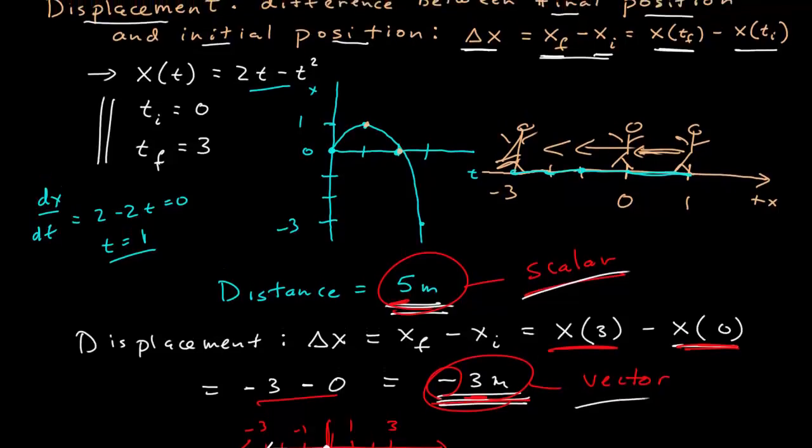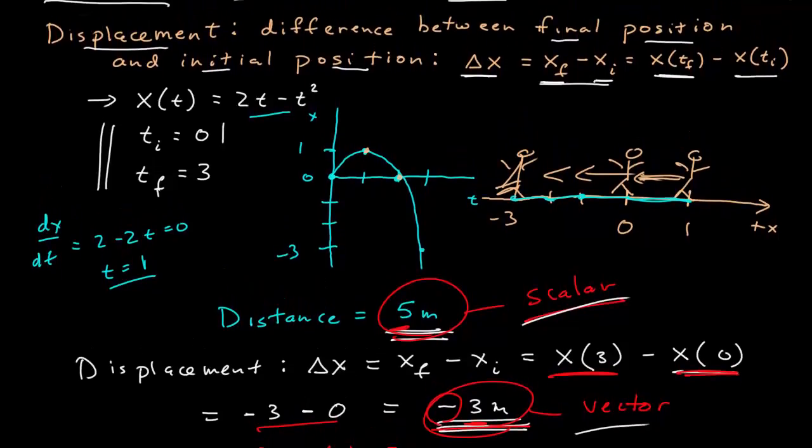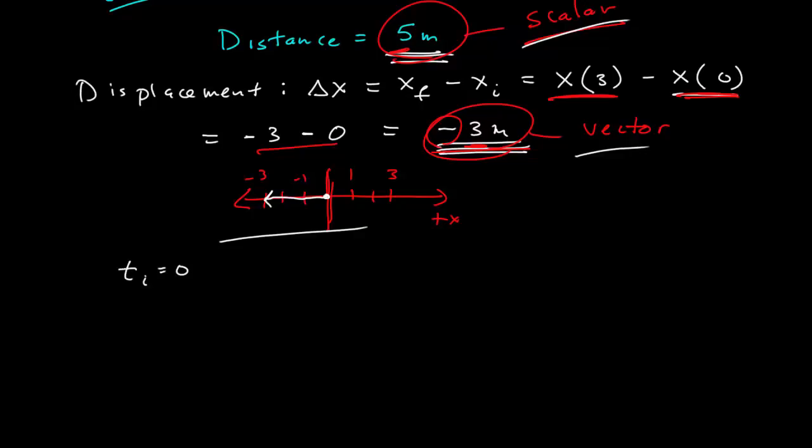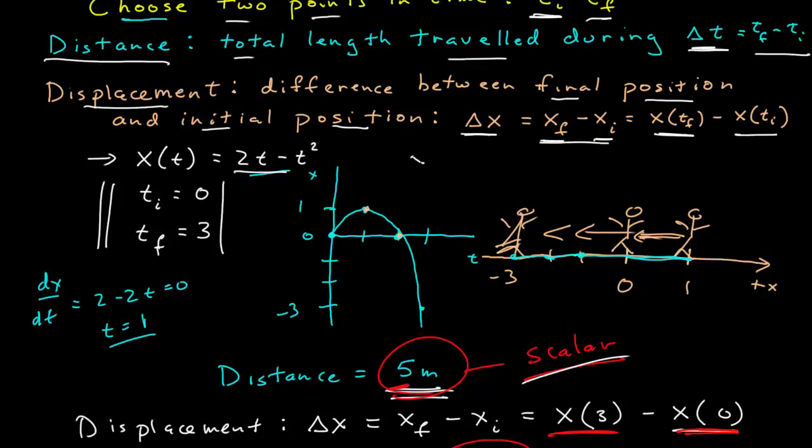Imagine if you were going, instead of between the initial time zero and three, the initial and final time, initial equals zero, and t final equals two. In two seconds, x of two equals zero again.